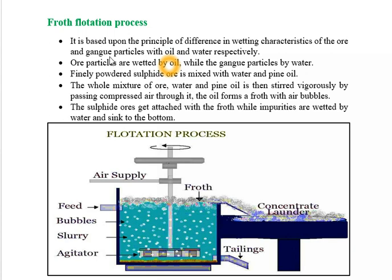In this process, water, ore, and oil are mixed together. Compressed air is supplied. When the sulphide ore particles are mixed with oil, they form froth and are collected separately, whereas the heavier gangue particles are collected at the bottom of the tank. In this way, today we learnt concentration of ore by physical process.